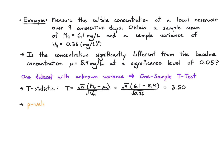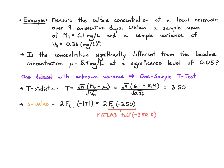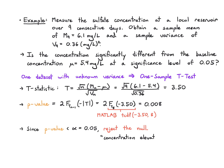To calculate the p-value, we call the CDF of a t-distribution with n minus 1 degrees of freedom evaluated at minus the absolute value of the t-statistic, which is minus 3.5. In MATLAB we call tcdf(−3.5, 8) — since n minus 1 is 8 with 9 samples — and we get 0.008. Since the p-value is less than alpha = 0.05, we reject the null hypothesis. Informally, we're saying the concentration is elevated at a significance level of 0.05.